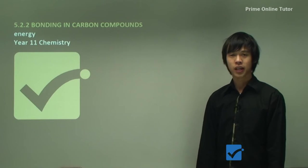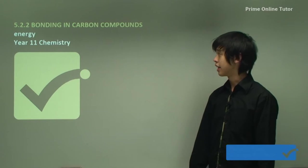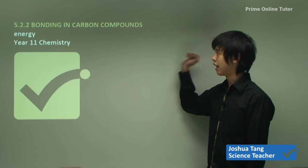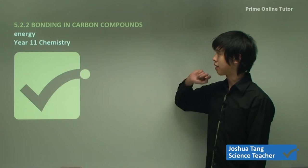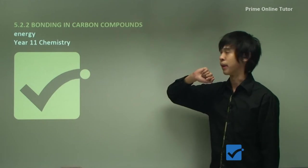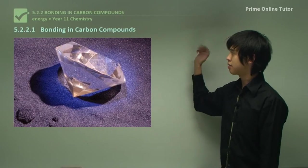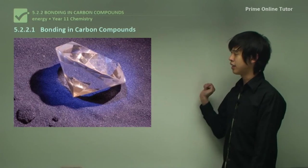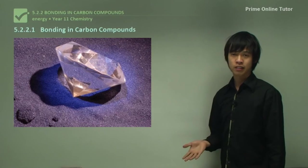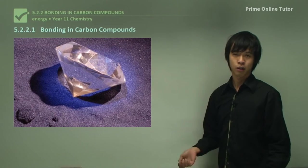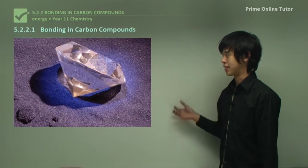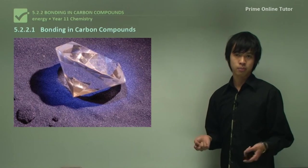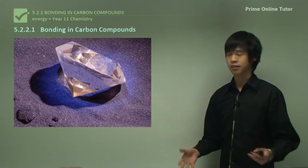Hello everyone and welcome again. Today we'll be talking about the energy module of a year 11 chemistry course, and in particular we'll be talking about bonding in carbon compounds. In today's lesson, bonding in carbon compounds is our focus. As you can see here, this is one of the more impressive carbon compound structures — a diamond, which is simply carbons bonded to one another in a network structure.